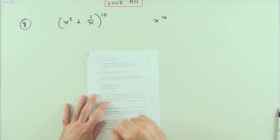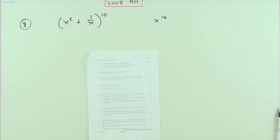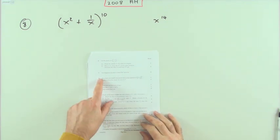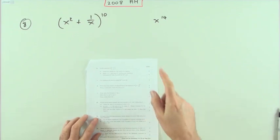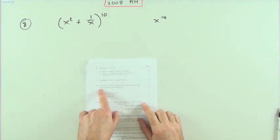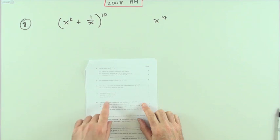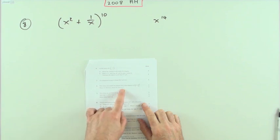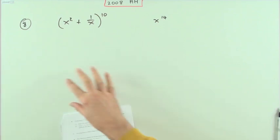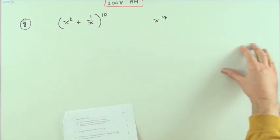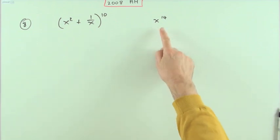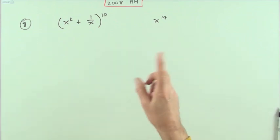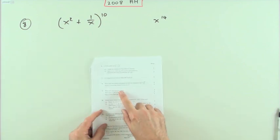Number eight — here it is then, the binomial expansion. Maybe you were waiting for it a bit earlier and worried if they weren't going to put it in. Here it is in the 2008 paper, and it's that nice one: obtain the term in x to the four — find a particular term in the expansion. Obviously not going to write the whole thing out just to locate that particular one.